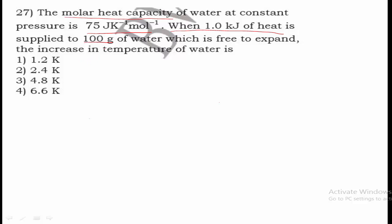They have given 100 g of water and 1 kJ of heat, which equals 1000 J. We need to find the rise in temperature when this heat is supplied to 100 g of water.